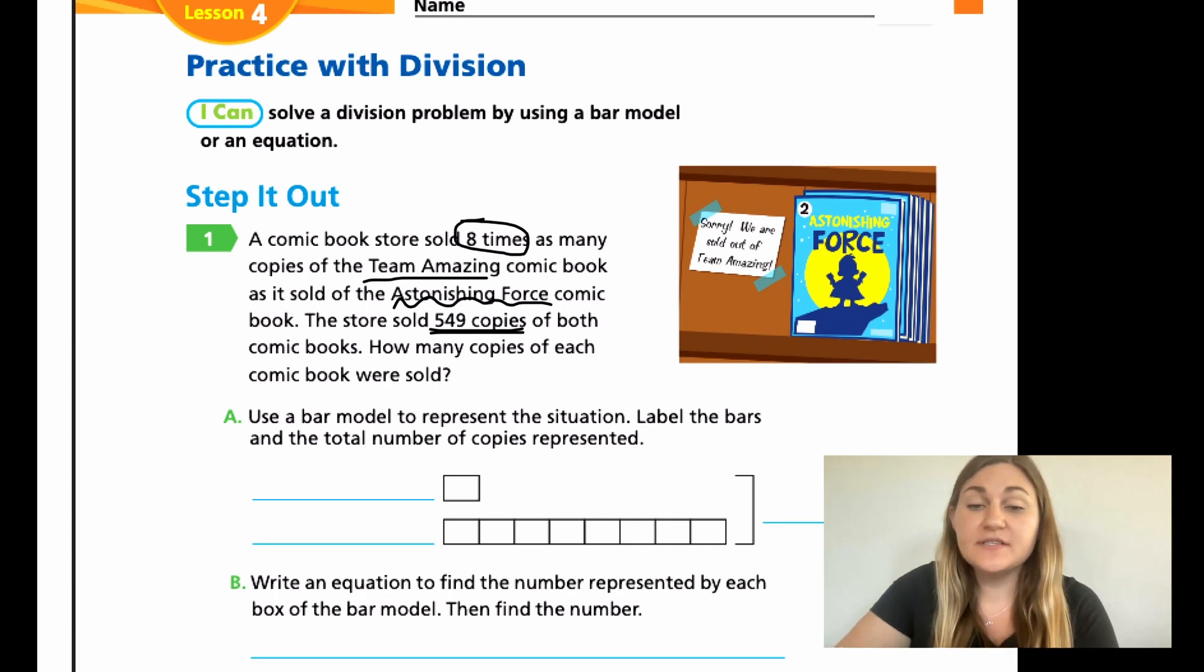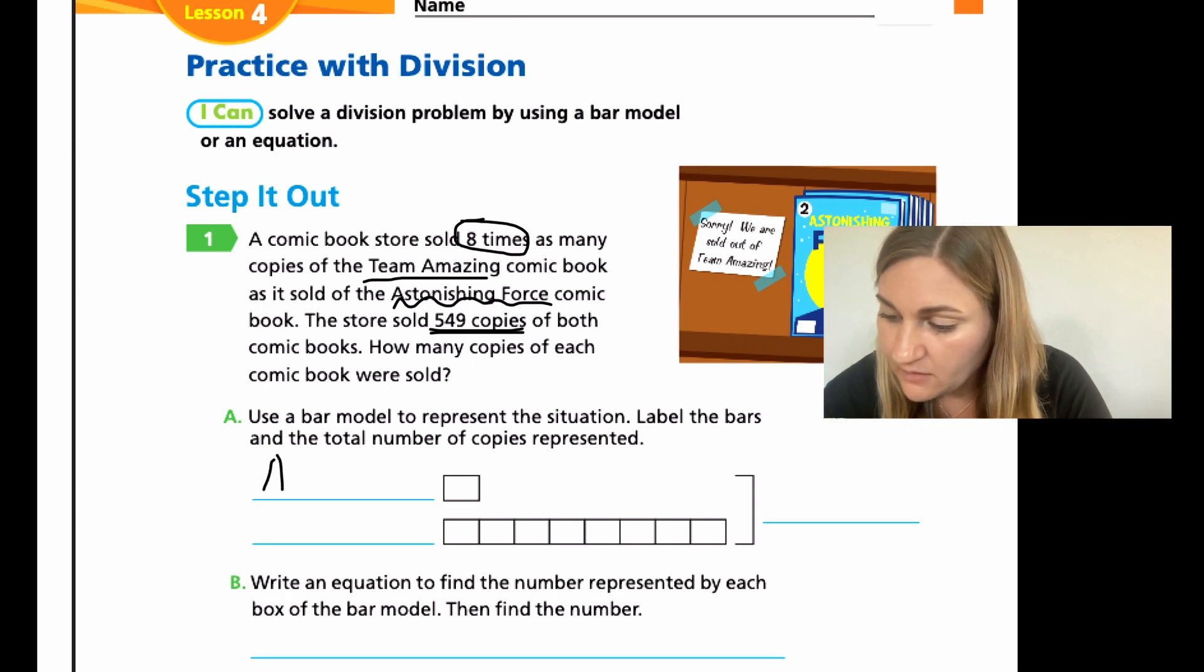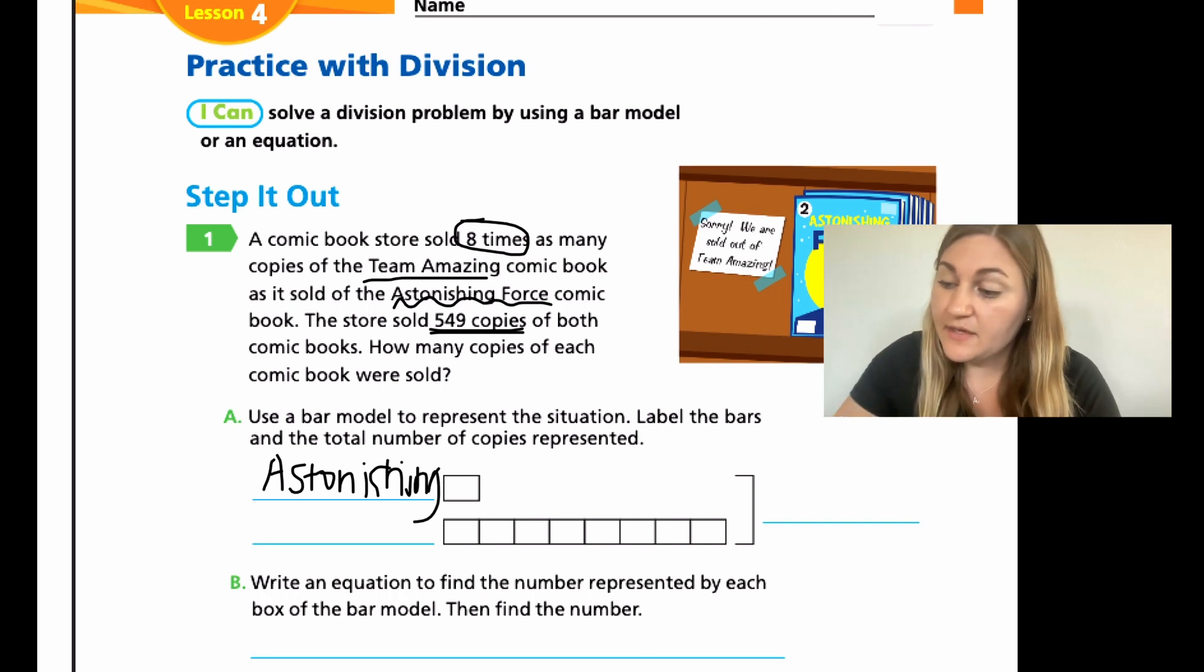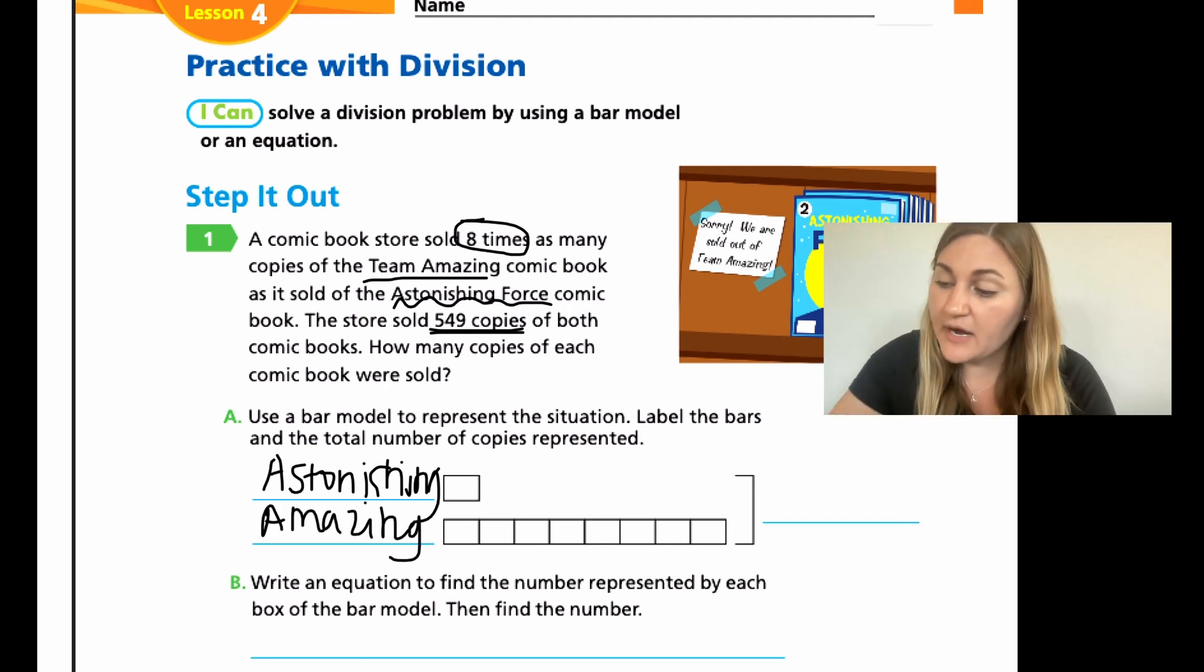Now it gives us a bar graph for part A. Use the bar model to represent the situation. Label the bars and the total number of copies represented. So we know that Team Amazing was eight times larger than Astonishing Force, which means just one block is going to be our Astonishing Force. I'm just going to write Astonishing. And then the one with the eight, that represents eight times larger. That's going to be the Amazing. And then over to the right, all nine of those blocks is going to be worth the 549 total copies.